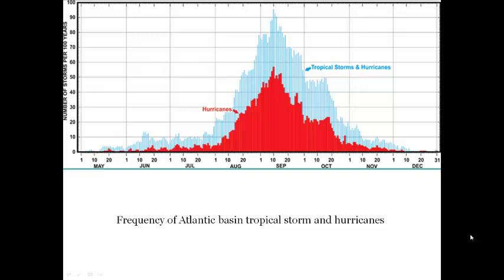Let's take a look at the evolution of how a storm becomes a hurricane. In this graph, you see the frequency of Atlantic Basin tropical storms compared to hurricanes. Before the storm becomes a hurricane, it has to pass through a few other stages of development. The previous one is a tropical storm, and you can see of the number of tropical storms here, in blue, the proportion of them that actually go on to become hurricanes.